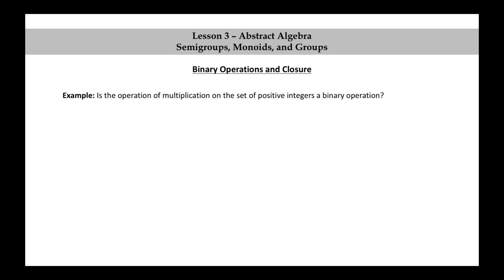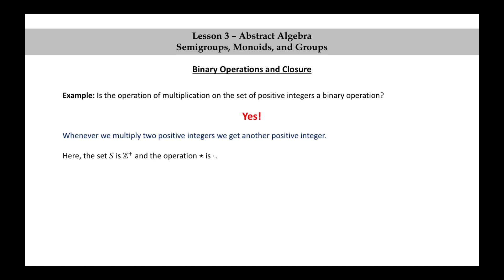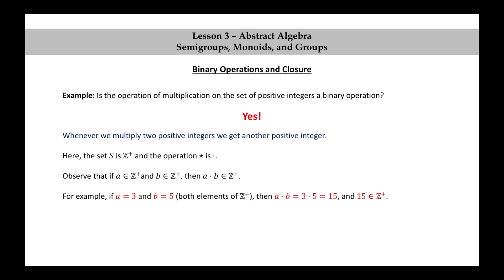Another example. Is the operation of multiplication on the set of positive integers a binary operation? Yes, it is. Whenever we multiply two positive integers, we get another positive integer. Here, the set S is Z+ and the operation star is multiplication. Observe that if a is a positive integer and b is a positive integer, then a times b is also a positive integer. For example, if a is 3 and b is 5, both elements of Z+, then a times b is 3 times 5, which is 15, and 15 is also an element of Z+.